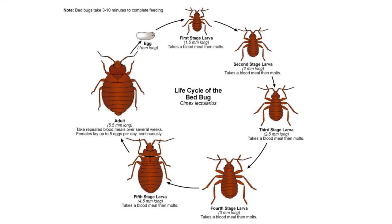Bed bugs undergo five nymphal stages, each requiring a blood meal before molting to the next stage, with the fifth stage molting into an adult. Nymphs, also lacking wing buds, resemble smaller versions of the adults. Nymphs and adults take about 5–10 minutes to obtain a full blood meal. Adults may take several blood meals over several weeks as long as a warm-blooded host is available. Adults live 6–12 months and may survive for a long period without feeding.